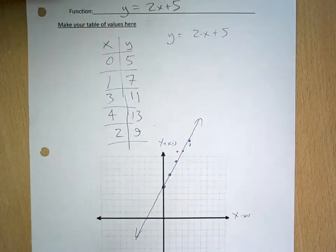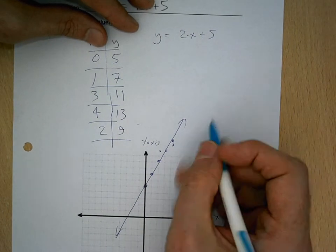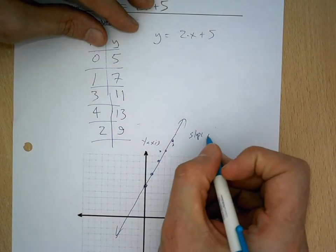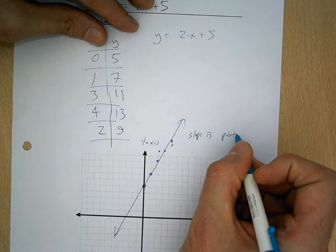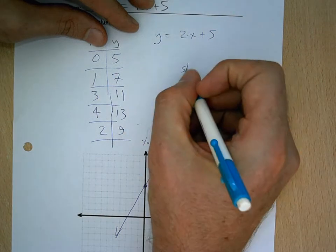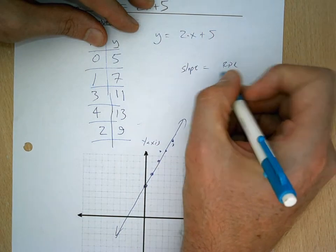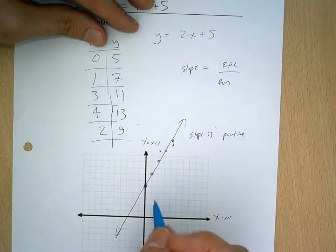So when I've done that, I see that I have a slope. My slope is going up, so my slope is positive. And I can actually figure this out. Slope is calculated by doing the rise divided by run.